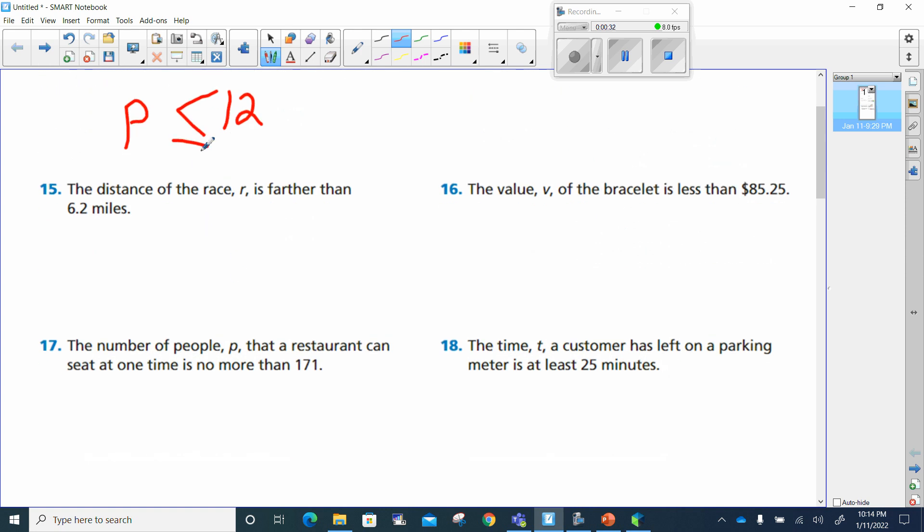Number 15 is next. The distance of the race r is farther than 6.2 miles. You know 6.2 is going to be in here. We know that it's going to be farther than. Farther means greater than, so that means my symbol will be this way. Now it's not going to be equal to because it says greater than, farther than.